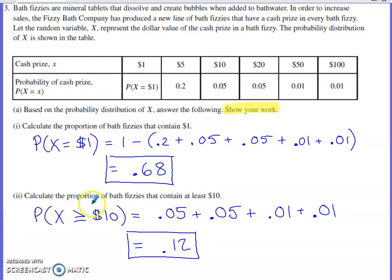Part two here, calculate the proportion of bath fizzies that contain at least $10. That would just be the sum of 0.05, 0.05, 0.01, and 0.01. We don't have to subtract anything off. There's not a potential for one bath fizzy to contain both a $10 prize and a $20 prize. You have to watch out for or probabilities in situations like that. In this case, there's no potential for overlap.